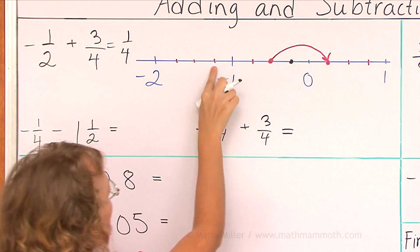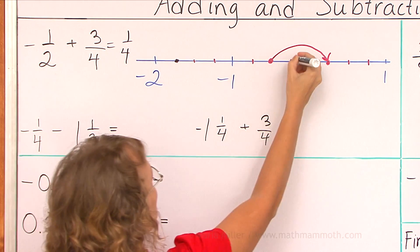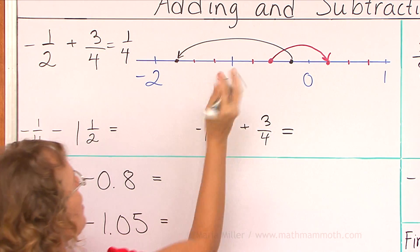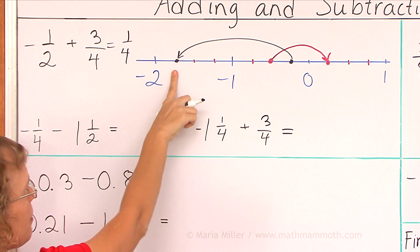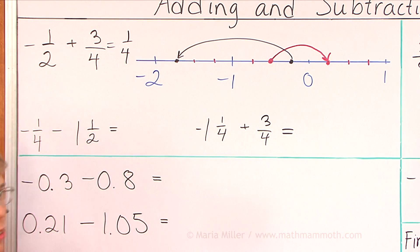And then one and one-half towards the negatives. So if I go from here to here that's one and then half more over here. And what fraction is it? It's negative one and three-fourths.